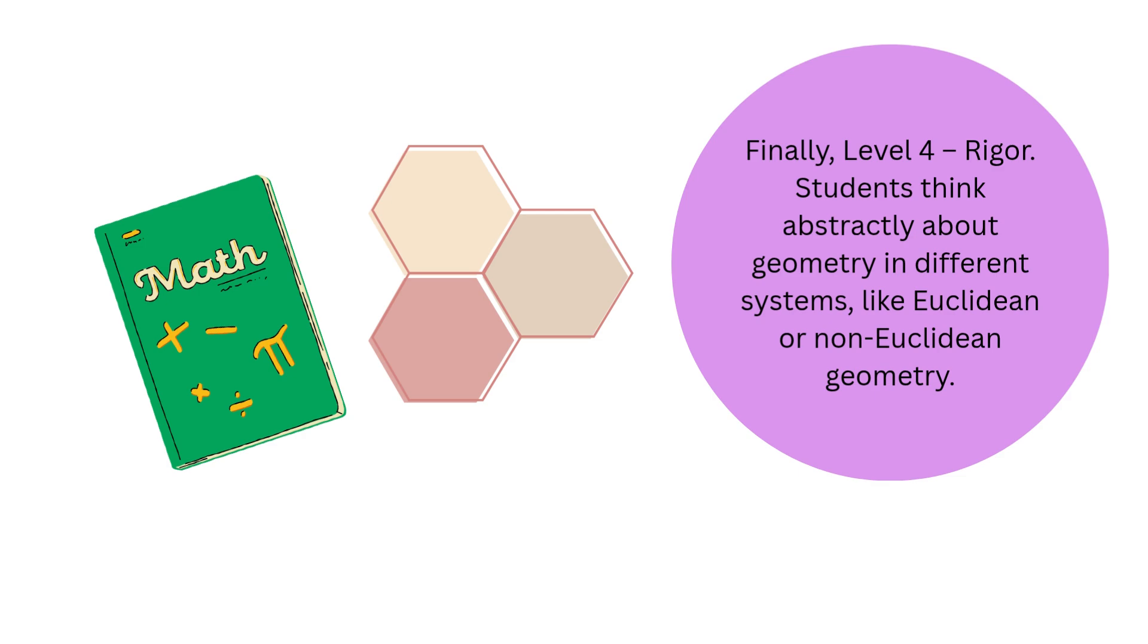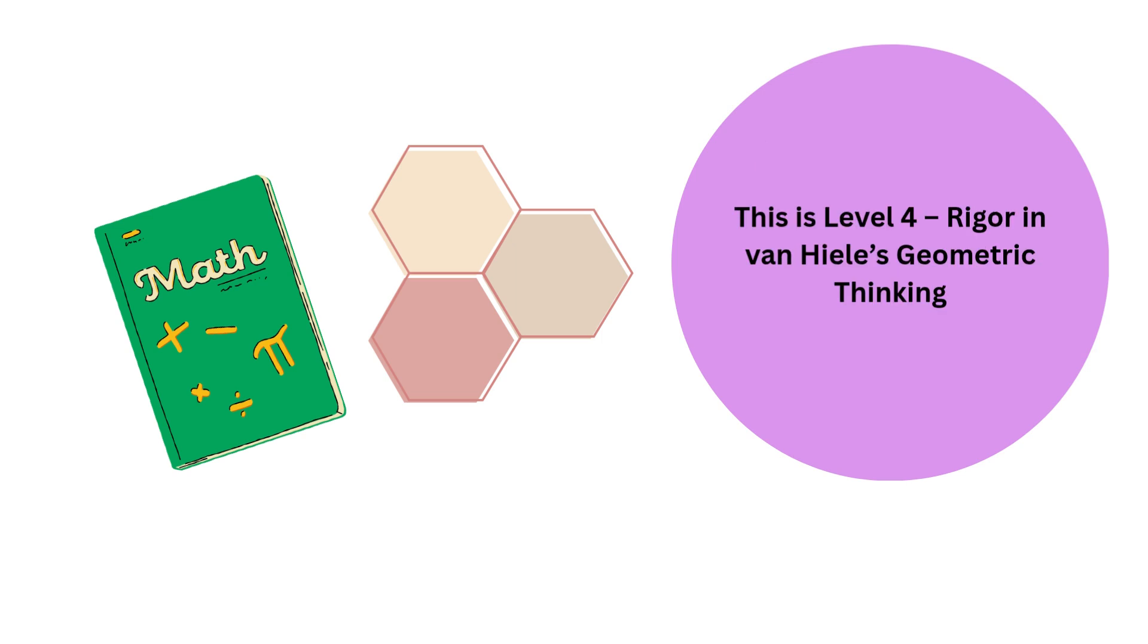Finally, Level 4—Rigor. Students think abstractly about geometry in different systems, like Euclidean or non-Euclidean geometry. This is Level 4—Rigor in Van Hiele's Geometric Thinking.